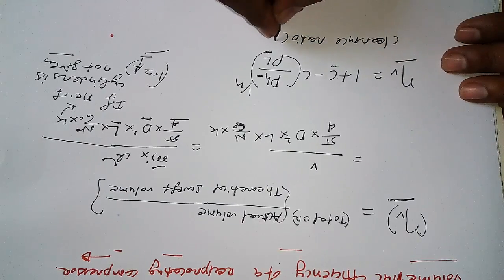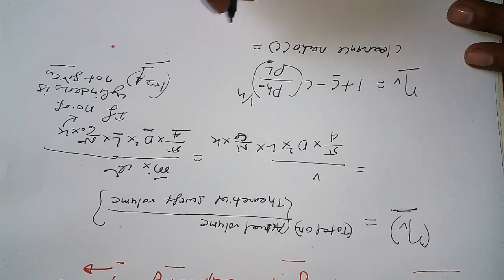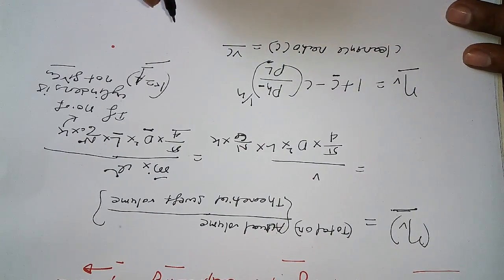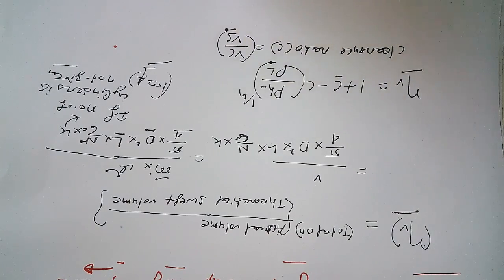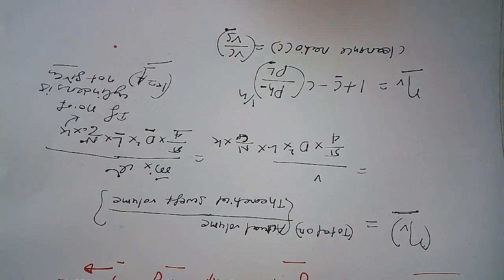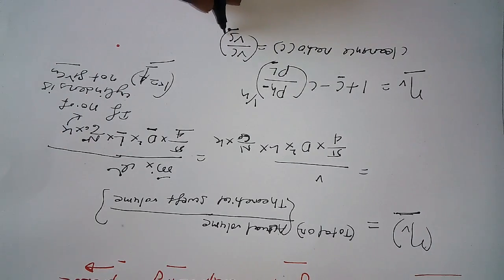The clearance ratio C is defined as the ratio of clearance volume to swept volume. The swept volume is the total volume displaced by the piston as it moves. The clearance volume is the volume remaining at the top dead center, denoted as VC.